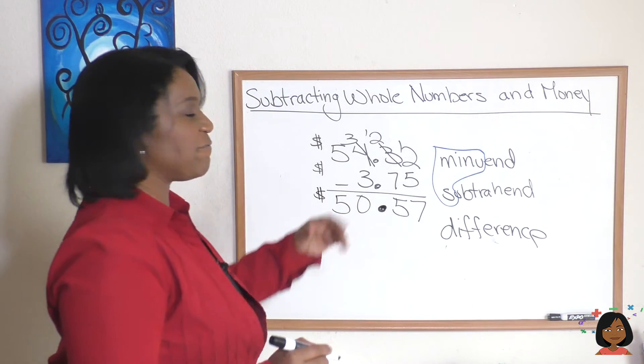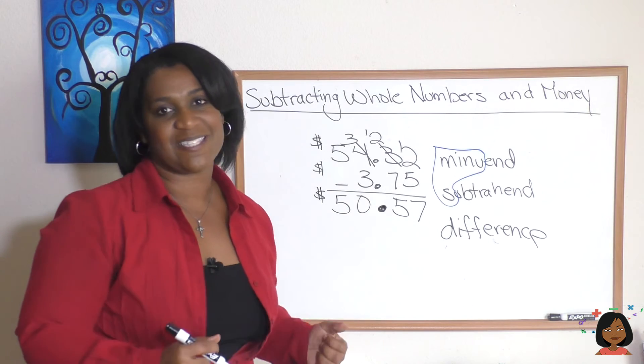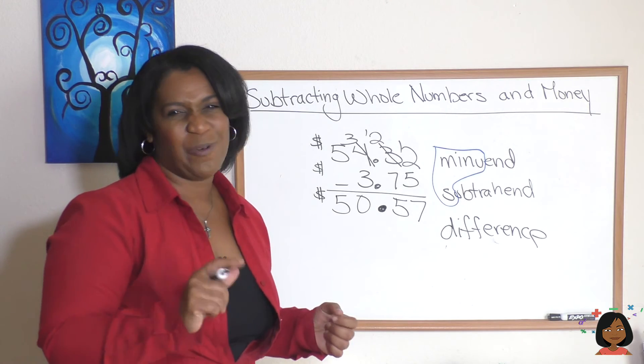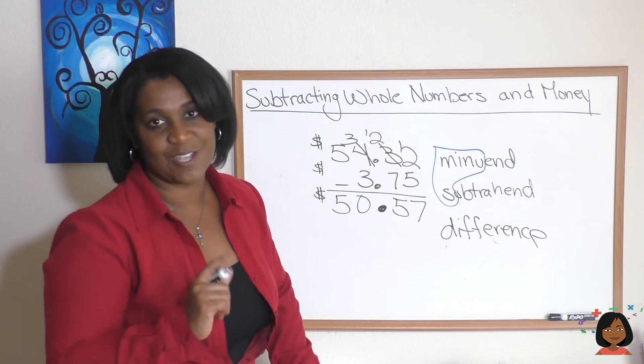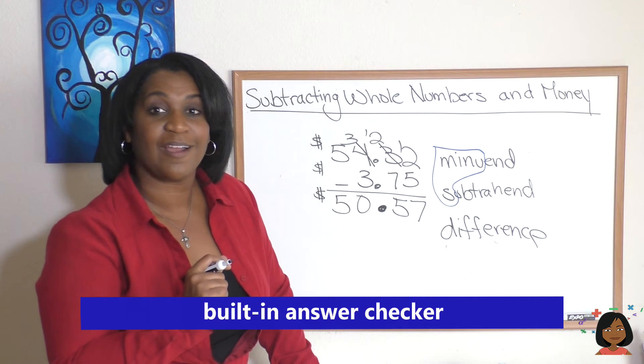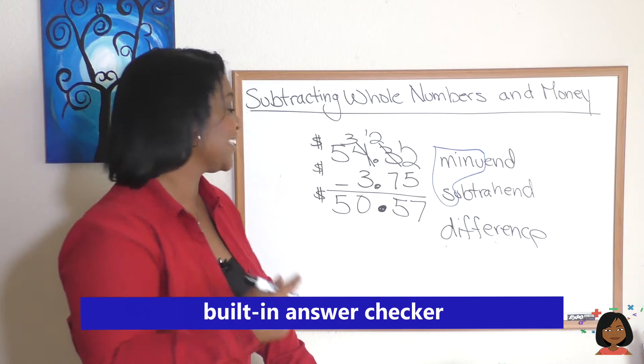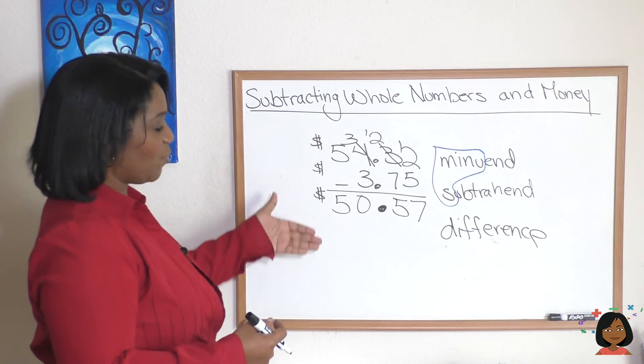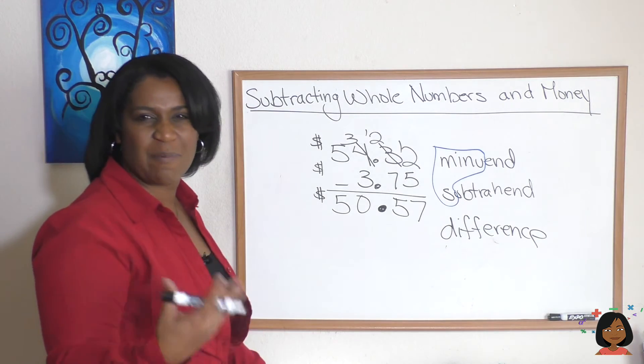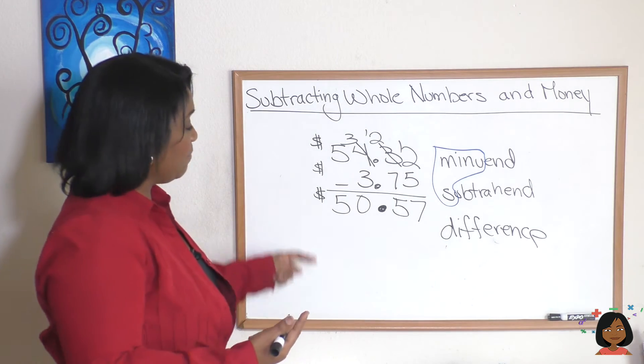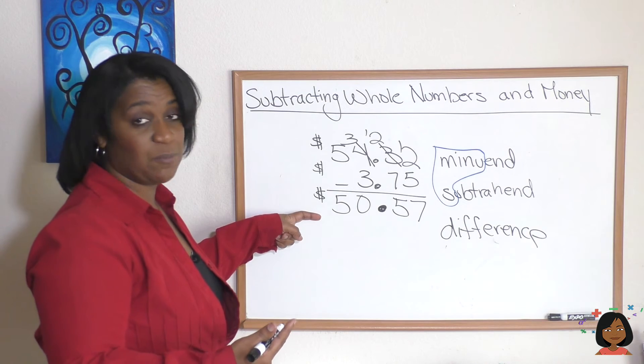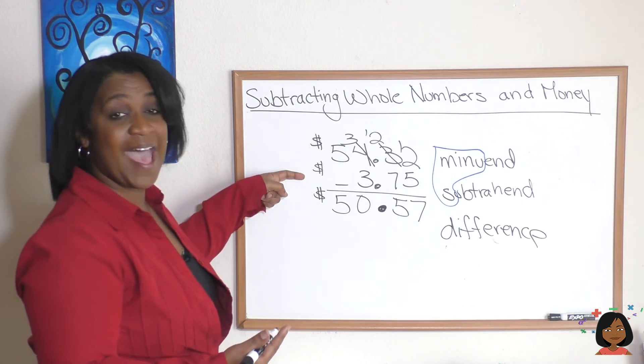Now I want to show you one of the cool parts about subtraction. Did you know that it has its own built-in answer checker? Yeah it does, watch. Take a look at this. So we subtracted, but if I want to know if my answer is correct, I can do something called adding up. If I start at the bottom, 50.57, and I add $3.75 to it, it should equal 54.32.